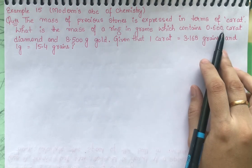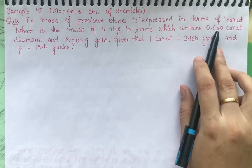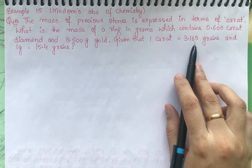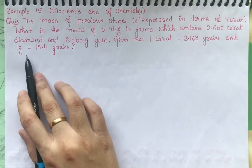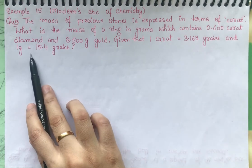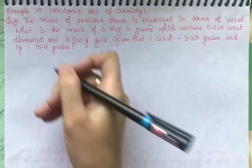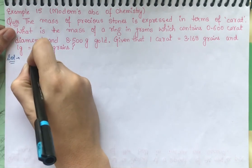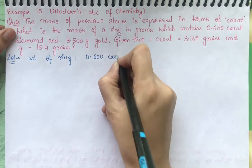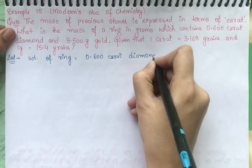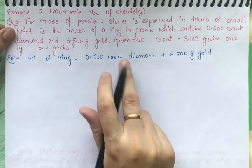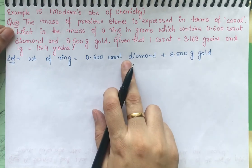The ring contains a diamond plus gold. The total mass is the mass of the ring. Given values: the weight of the ring is 0.600 carat diamond plus 8.500 g of gold. The 8.500 g is already in grams, so we don't need to change it, but we do need to convert the carat value into grams.